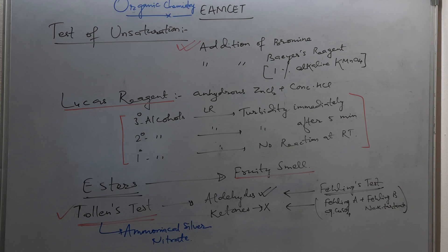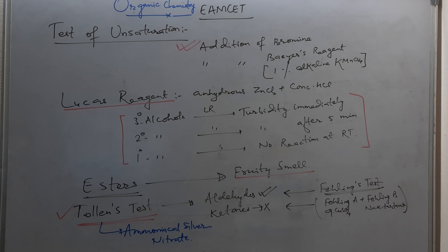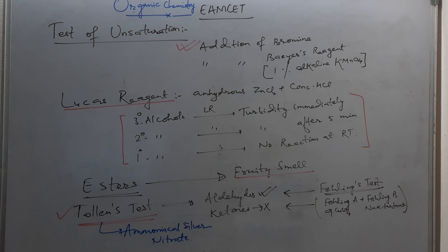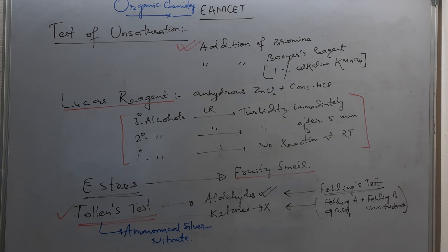Tertiary alcohols react with Lucas reagent to give cloudiness or turbidity immediately. Secondary alcohols give turbidity after five minutes. Primary alcohols show no reaction at room temperature. Therefore, the rate of reactivity with Lucas reagent is: tertiary > secondary > primary. The turbidity is due to the insoluble chloride that is formed.